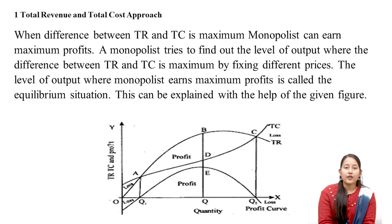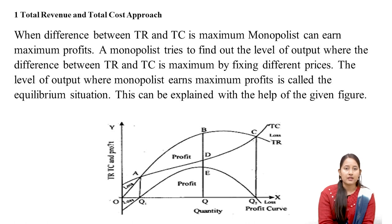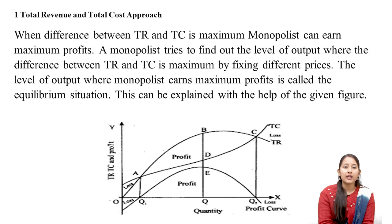Let's start with the total revenue and total cost approach. When the difference between TR, that is total revenue, and TC, that is total cost, is maximum, the monopolist can earn maximum profit. A monopolist tries to find out the level of output where the difference between TR and TC is maximum by fixing different prices. The level of output where the monopolist earns maximum profit is called the equilibrium situation.